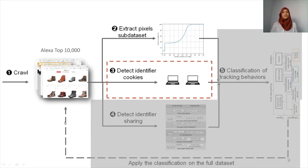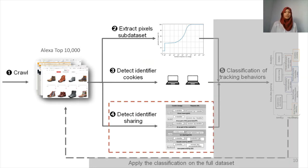The third step was to detect identifier cookies. Not all cookies are used for identification purposes. In order to distinguish users, trackers associate them with different cookies. An identifier cookie should be unique per user, or user-specific. To filter out non-user-specific cookies, we made a second crawl of the Alexa top 10,000 domains from a distant machine, and then filtered out the cookies with the same hostname value across the two crawls. The fourth step was to detect identifier sharing — you can refer to the paper to read more about the six different methodologies we performed to detect this sharing.